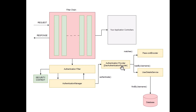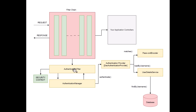The Authentication Provider now has the UserDetails and confirms whether the username and password are correct. Once validated, it creates a complete, populated Authentication object — updated with additional details like roles and authorities. This updated object is handed back to the Authentication Manager, which returns it to the Authentication Filter, and then the Security Context is set.